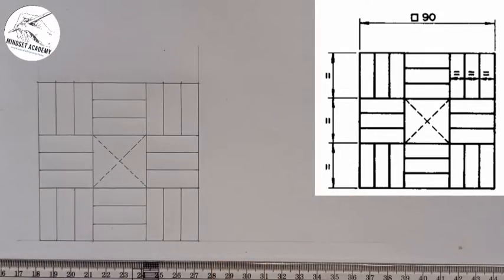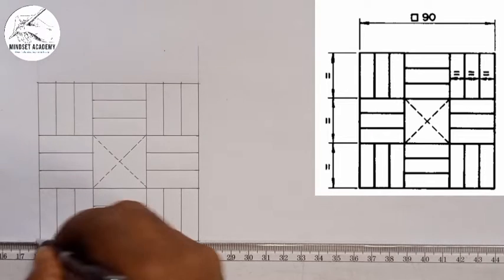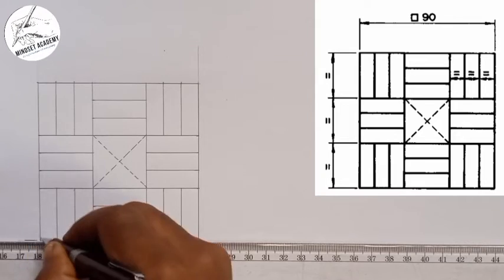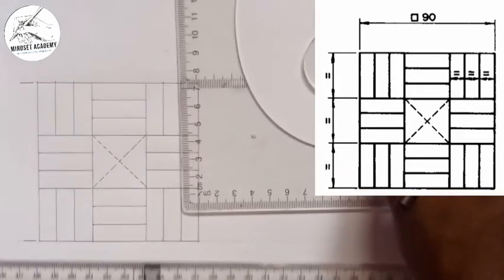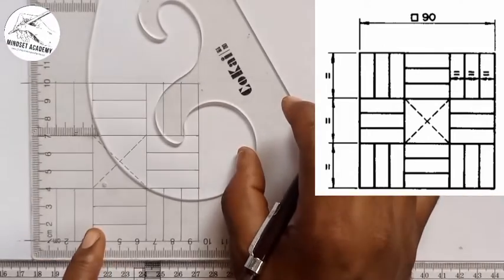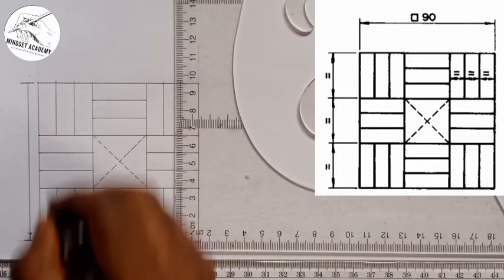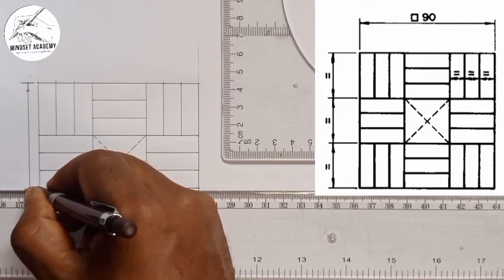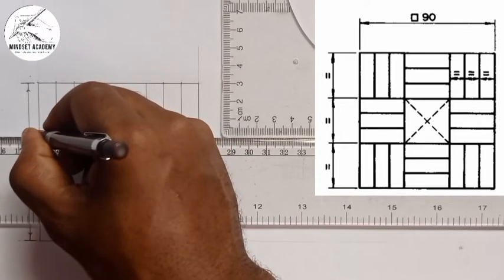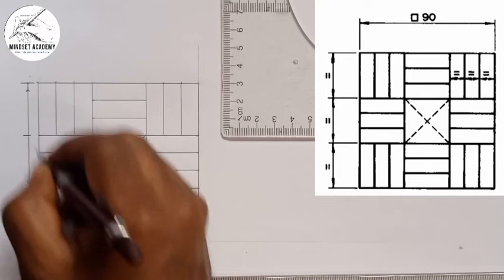The next thing we have to do is the dimensioning. I'll draw extension lines at this point — a line that does not touch my diagram. I'll come up and draw that line also. I'll take my T-square and C-square and draw a vertical dimension line with an arrow at each end. I'll draw lines separating them and add arrows at each end.